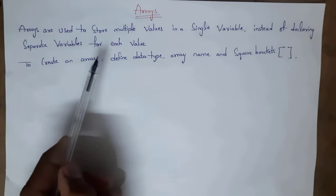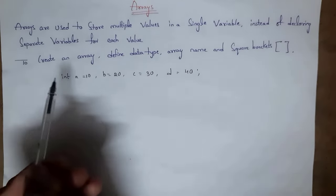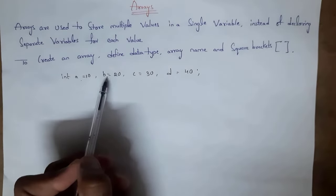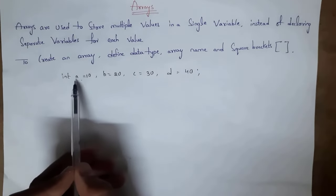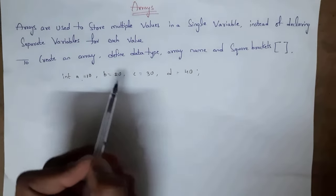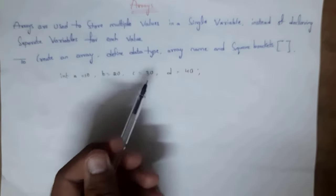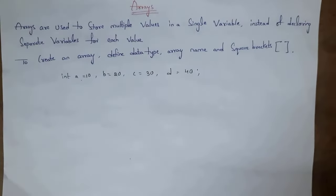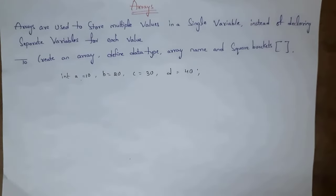Arrays are used to store multiple values in a single variable instead of declaring separate variables for each value. For example, if I want to declare values, I need to declare: int a = 10, b = 20, c = 30, d = 40. For each value I took a separate variable. But if I want to store all these values — 10, 20, 30, and 40 — in a single variable, for that purpose we use arrays.